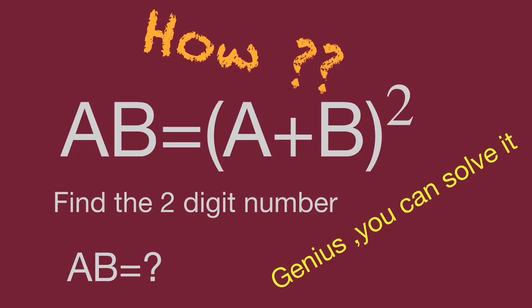Hello, you are watching Balihibo math genius riddles. We have a fun math question: a two-digit number AB is equal to the quantity A plus B, squared. Find the number AB. In this video we share an interesting idea to get the number. Would you please try to find it your own way? Pause the video and try it. When you are ready, keep watching to get the result.